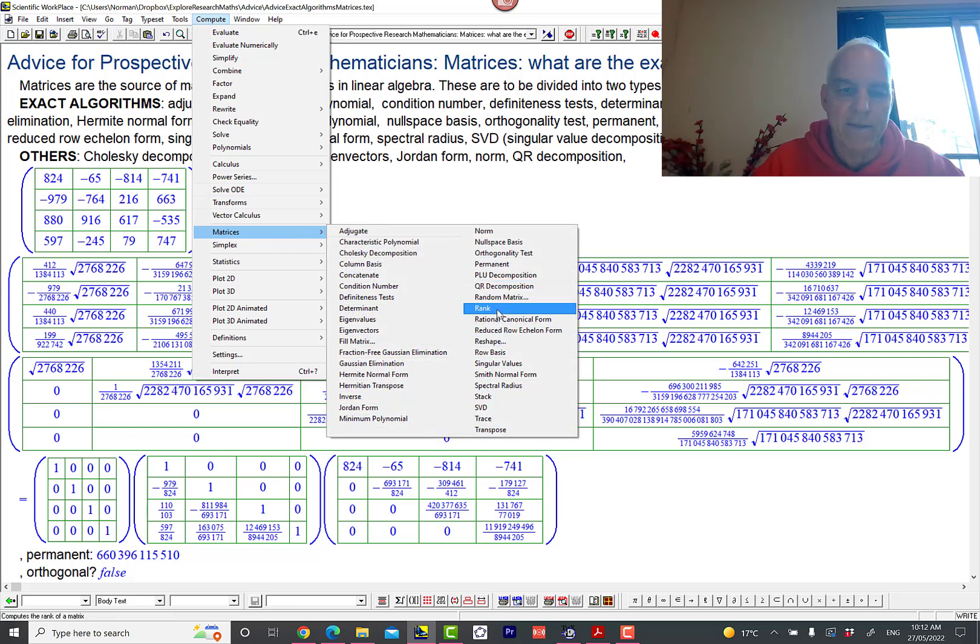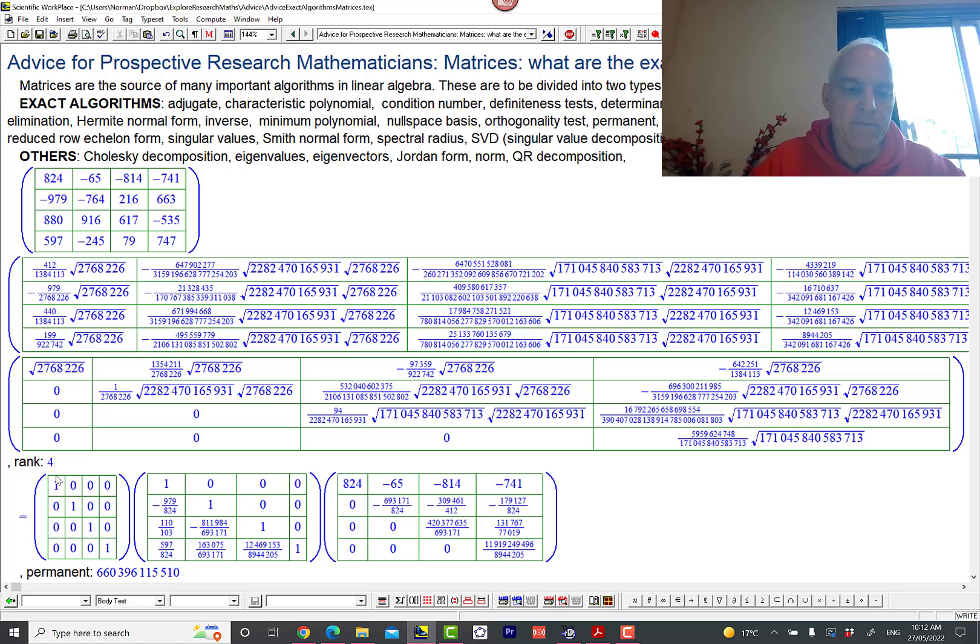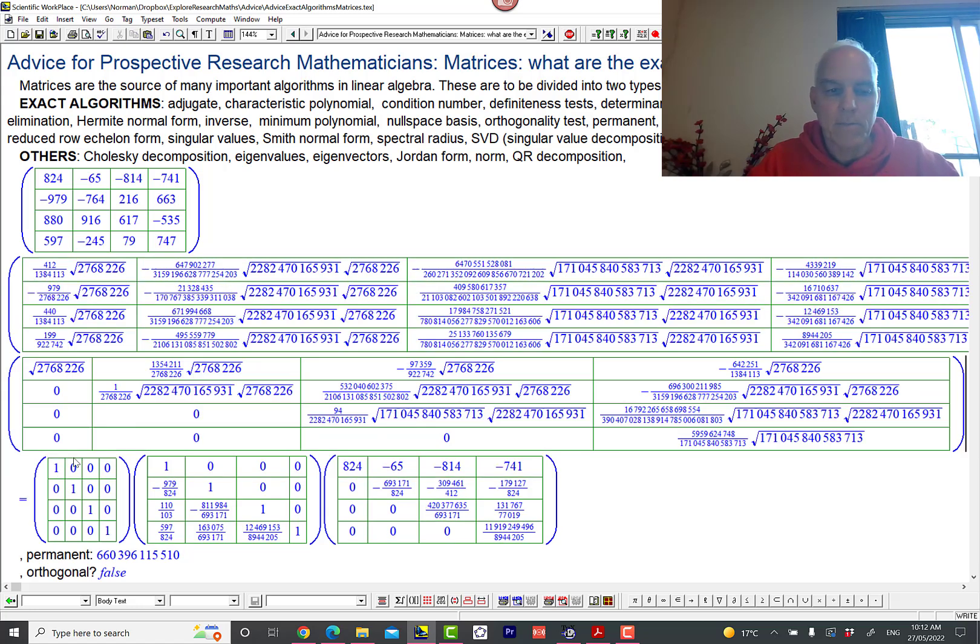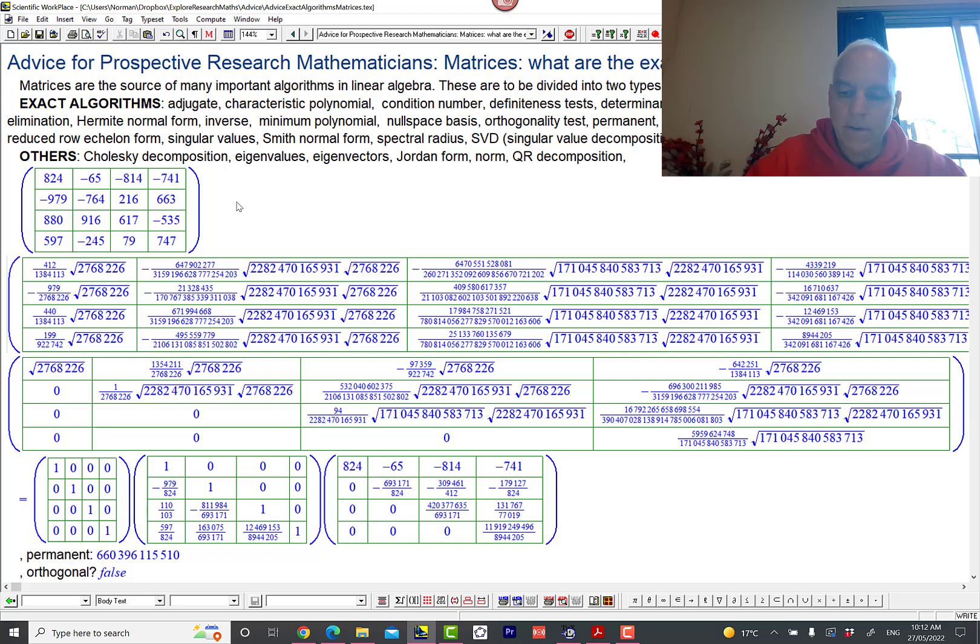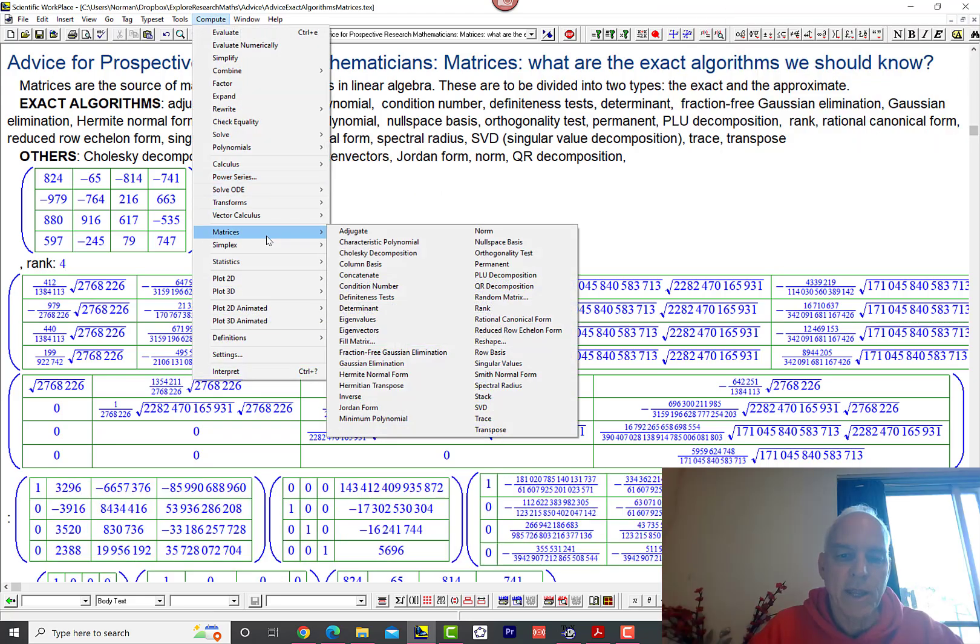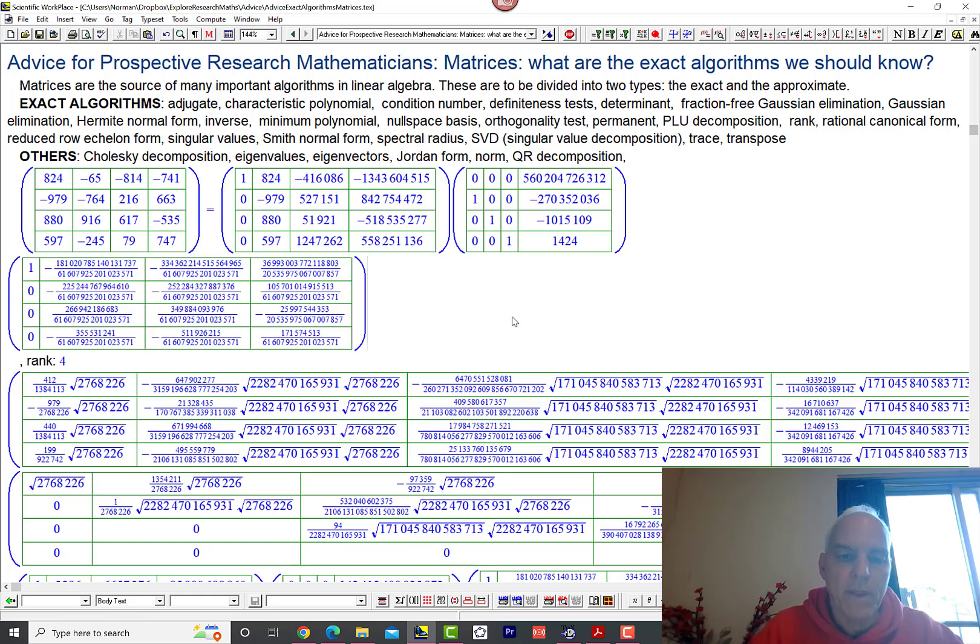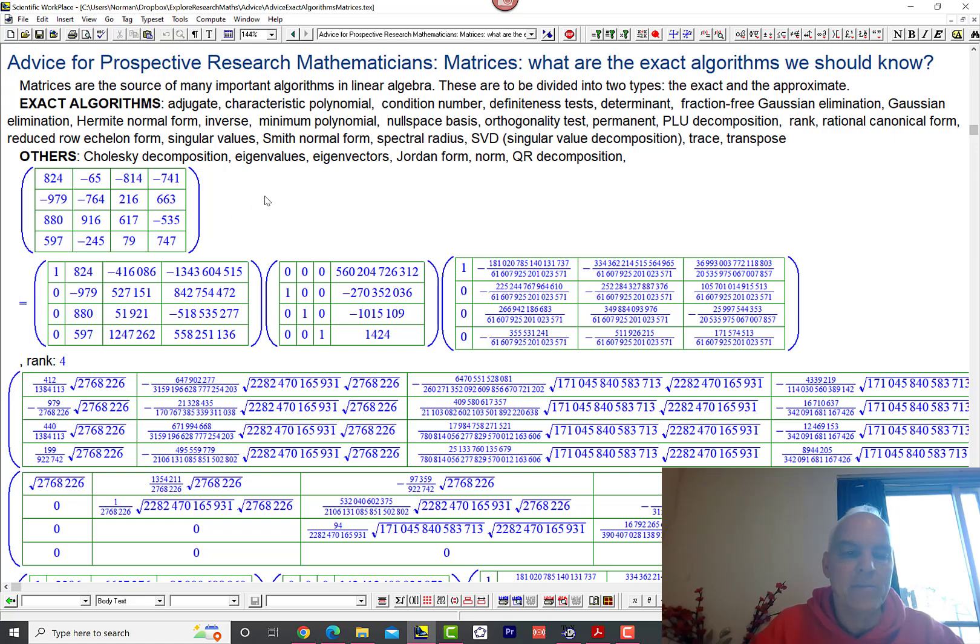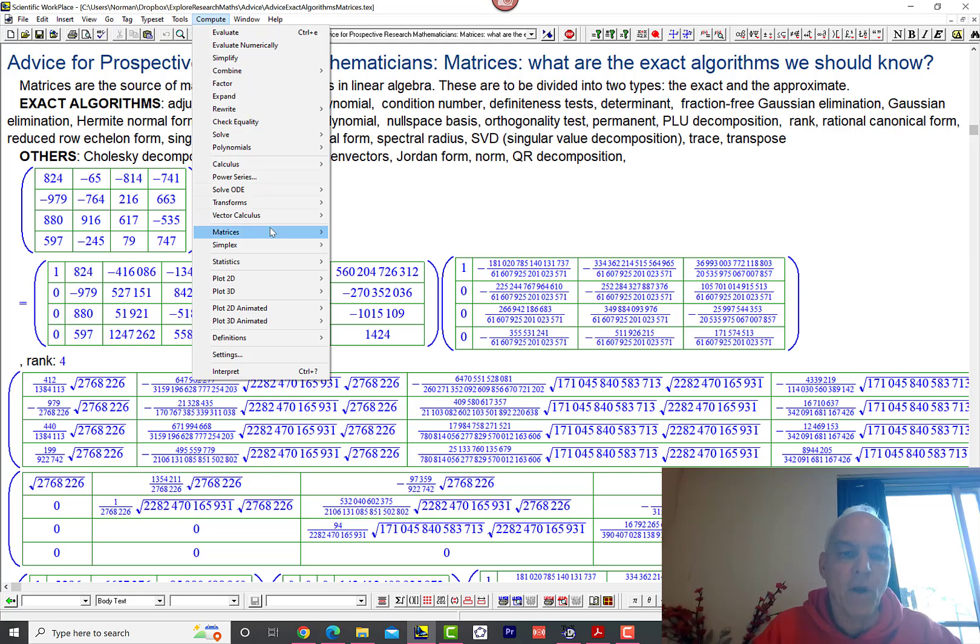Next we have rank. Rank of a matrix—it's four. Rank is four and that's clearly exact. Next we have rational canonical form. You can see this is rational, as the term suggests, and it's another kind of expansion or writing the matrix as a product of particular kinds of matrices. But that's certainly still exact because we're just getting rational numbers.